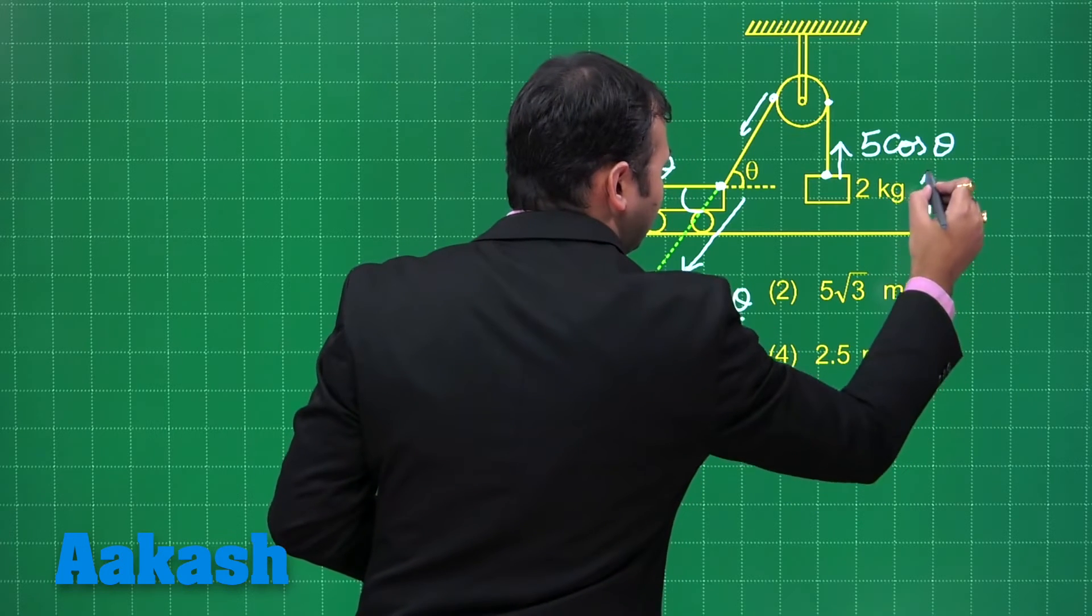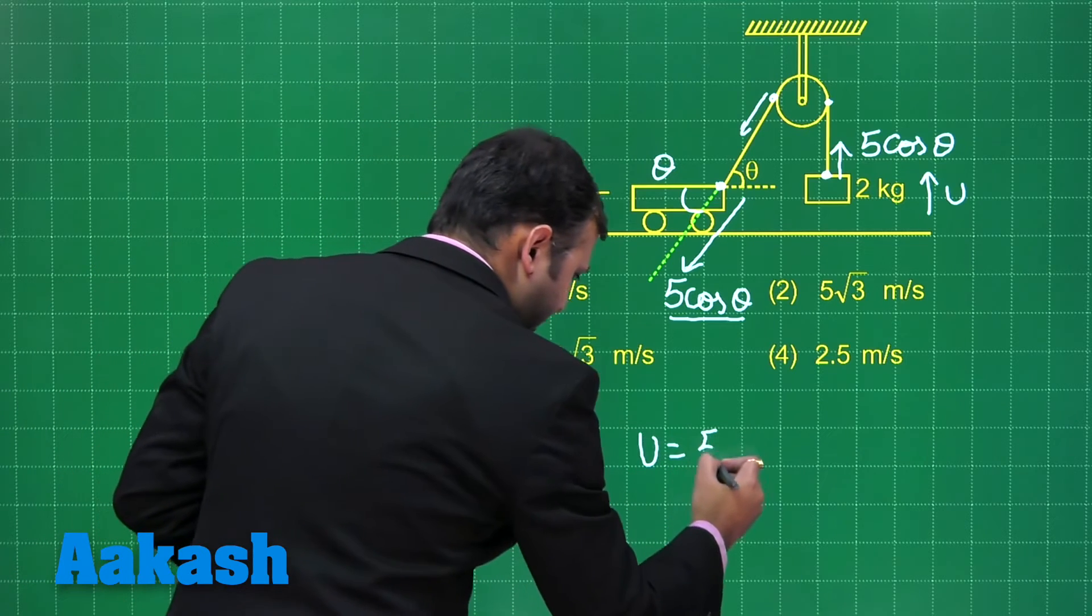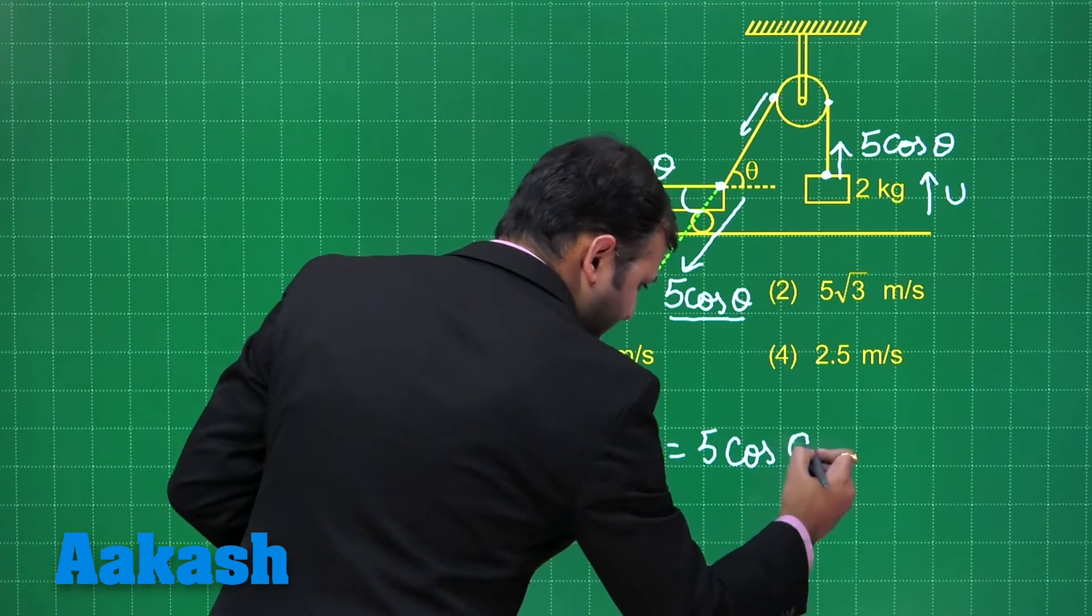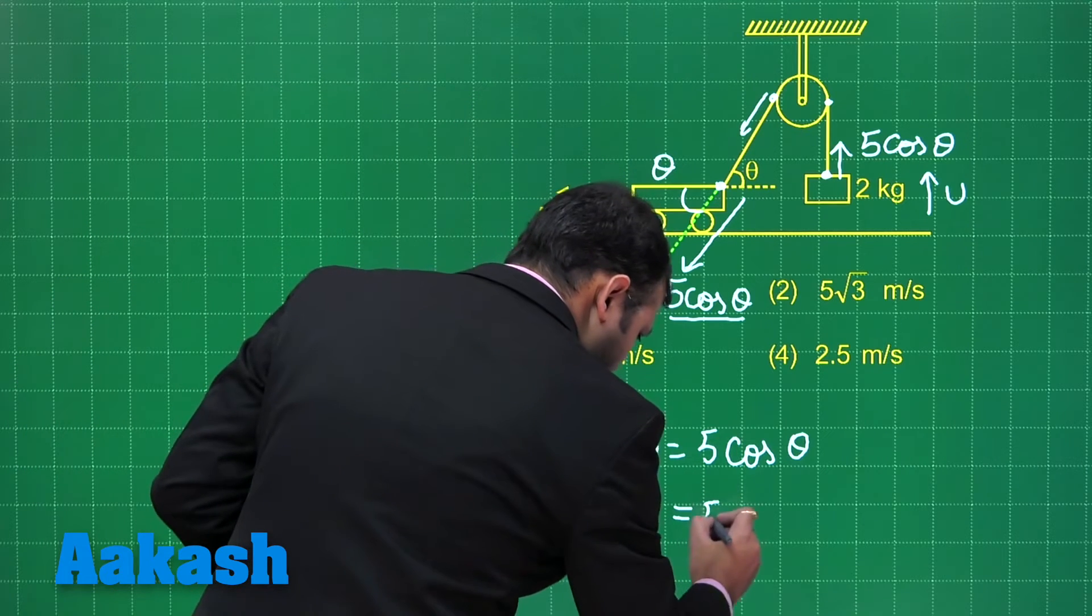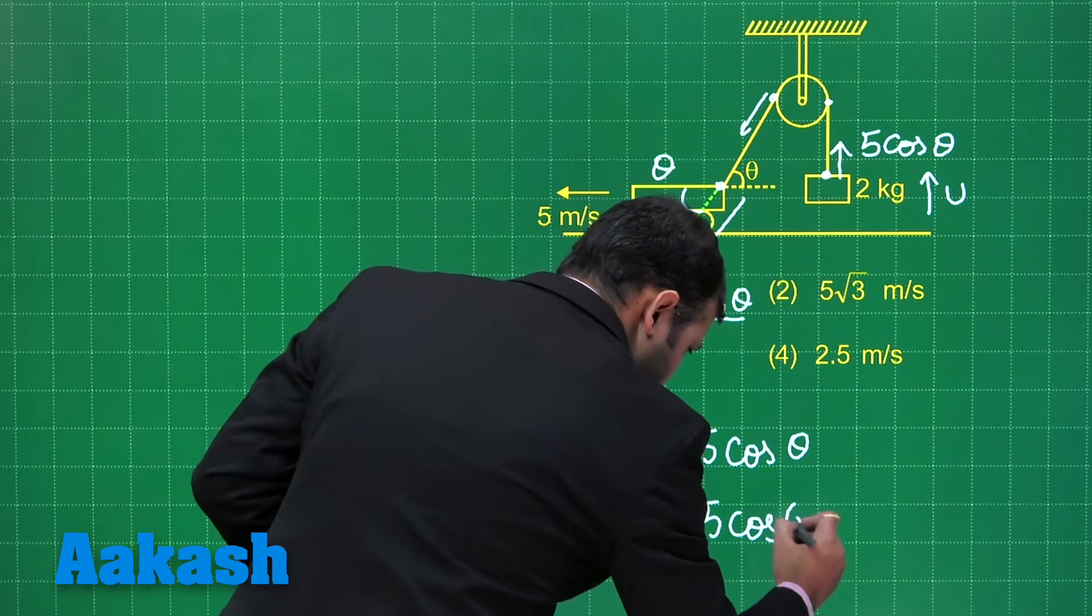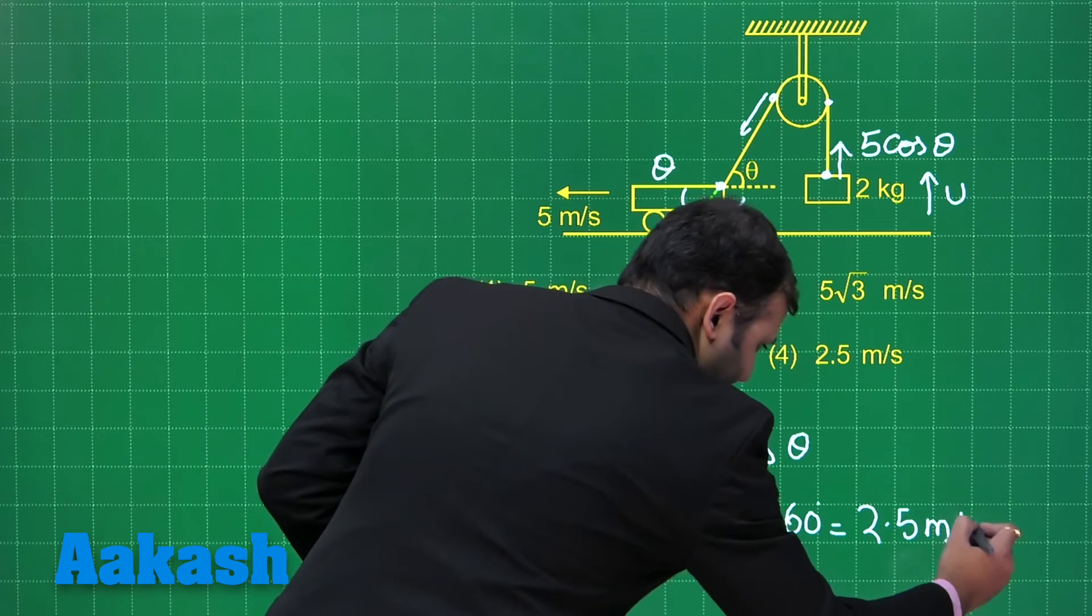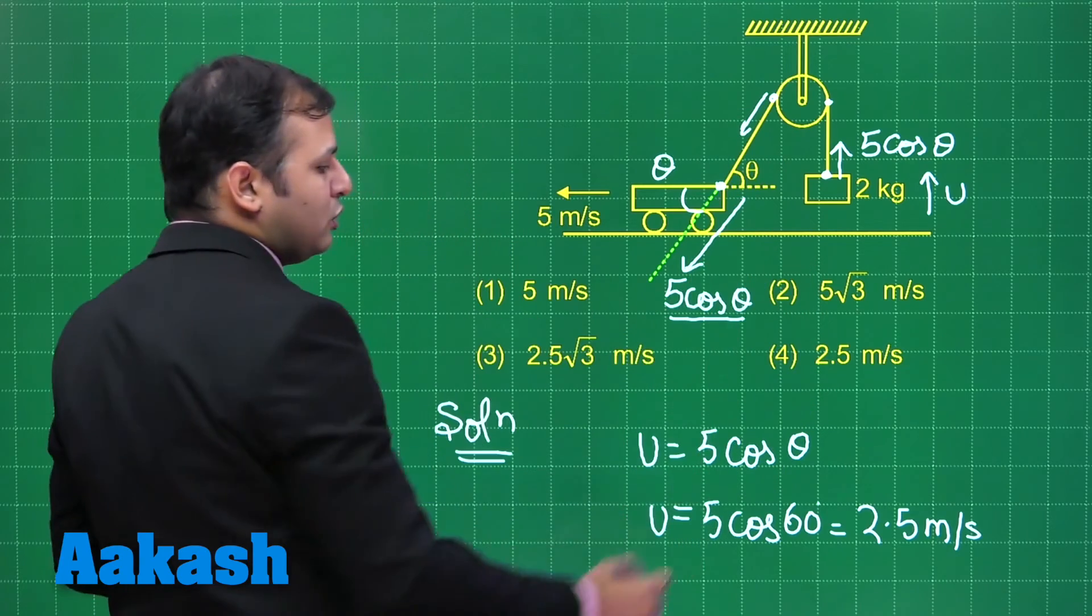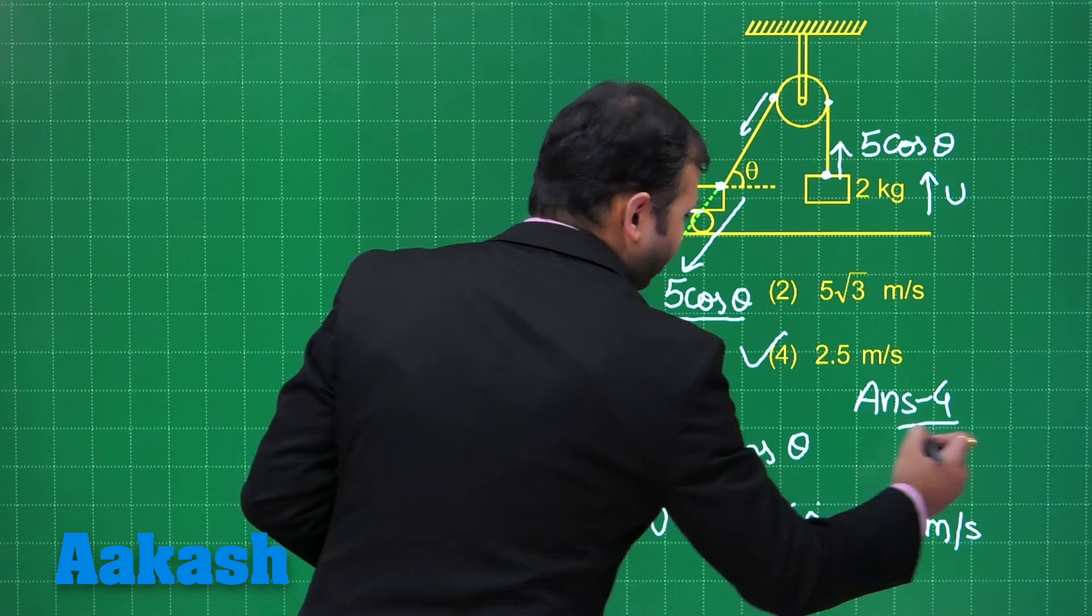So if you consider the velocity of the 2 kg block as u, you can write u = 5cosθ. And a particular angle 60° has been told to you, so it is 5cos60°. That would be equal to 2.5 m/s. So the velocity of this 2 kg block upwards would be 2.5 m/s. So the answer should be option number 4.